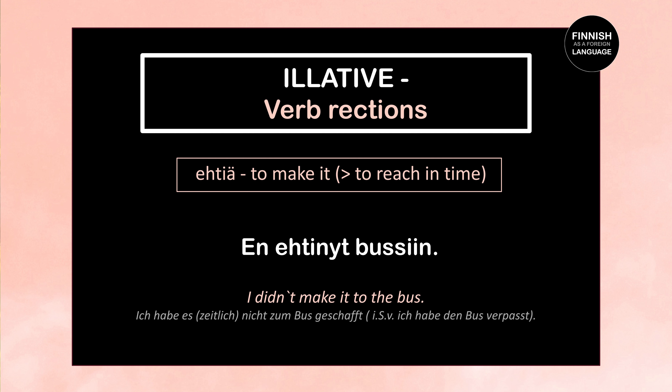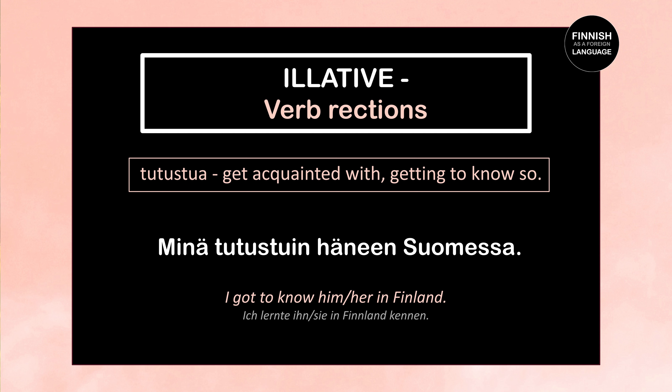The last verb: tutustua, meaning to get acquainted with or get to know someone. Minä tutustuin häneen Suomessa — I got to know him or her in Finland. Minä tutustuin is the first person past tense of tutustua. Häneen is the illative of hän, meaning he or she. Suomessa is the inessive of Suomi, meaning Finland — we use inessive to say where I got to know them. When using tutustua, the person we get acquainted with stands in the illative.